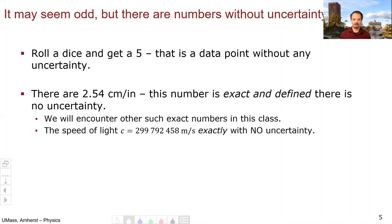One particularly famous is the speed of light. The speed of light is exactly 299,792,458 meters per second. Exactly. An infinite number of significant figures, no uncertainty, because this is actually how the meter is defined.